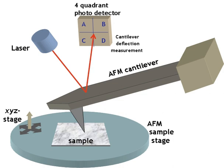Scanning electrochemical microscopy is a technique within the broader class of scanning probe microscopy that is used to measure the local electrochemical behavior of liquid, solid, liquid, gas and liquid, liquid interfaces.